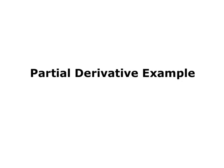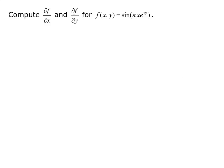In this video, we'll do a partial derivative example that is a little more complicated, where we have to use the single variable chain rule. Our example asks us to compute partial f partial x and partial f partial y for the function f of xy equals sine of pi x e to the xy.